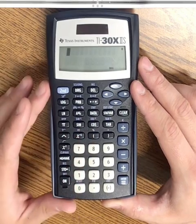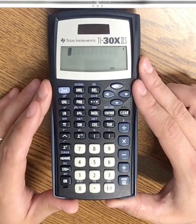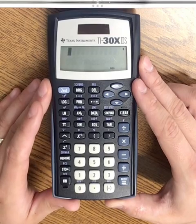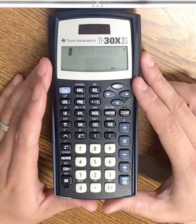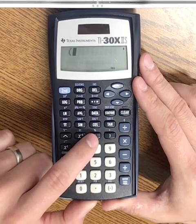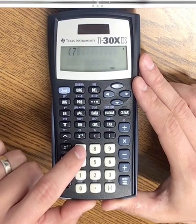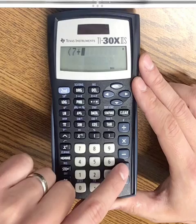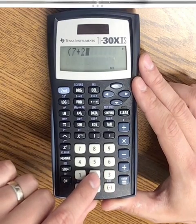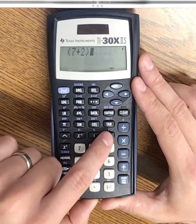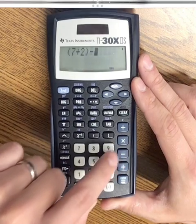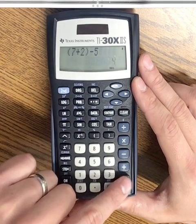So for example, if I had (7+2)-5, I would simply type parenthesis 7 plus 2 end parenthesis minus 5 and press enter.